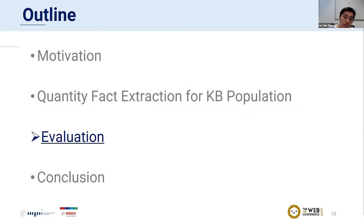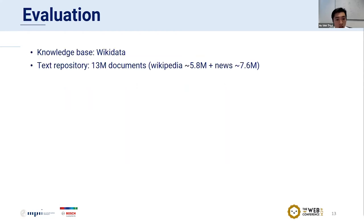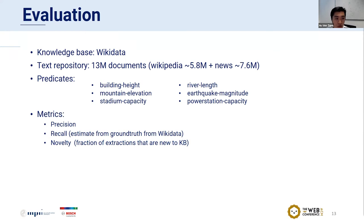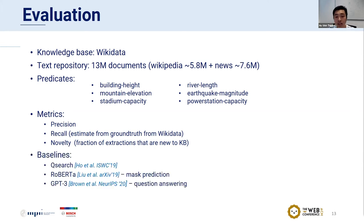For the evaluation, we performed experiments to evaluate our approach. For the setup, we use Wikidata as the KB, which is the richest publicly available KB in terms of quantity facts. Our text collection consists of about 30 million documents combined from Wikipedia and other news articles. We experimented on six predicates: building height, mountain elevation, stadium capacity, earthquake magnitude, powerstation capacity, and so on. We measured the quality of extracted facts using three metrics: precision, recall, and novelty, where recall is computed relative to what's already contained in Wikidata, and novelty is the fraction of extracted facts that are new to the KB. We compare our method with three baselines: the Q-Search system from earlier work, and two neural language models, RoBERTa and GPT-3.